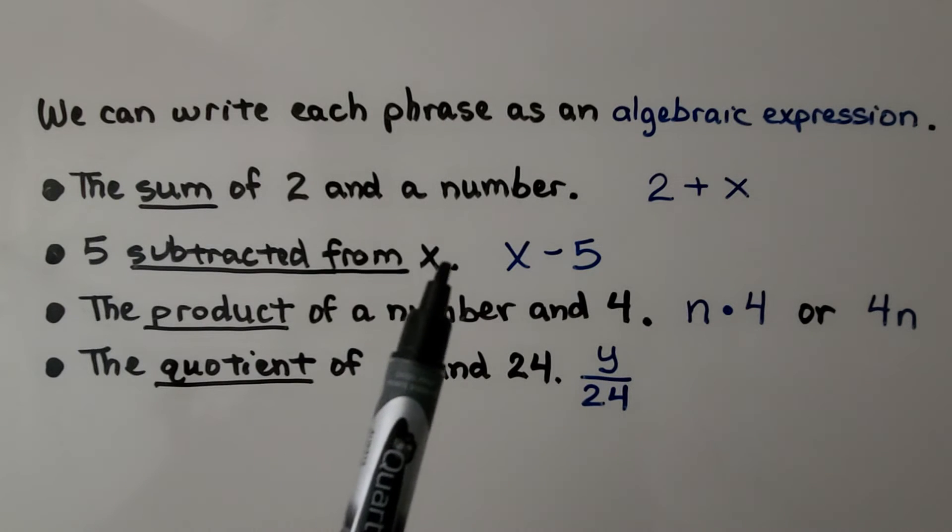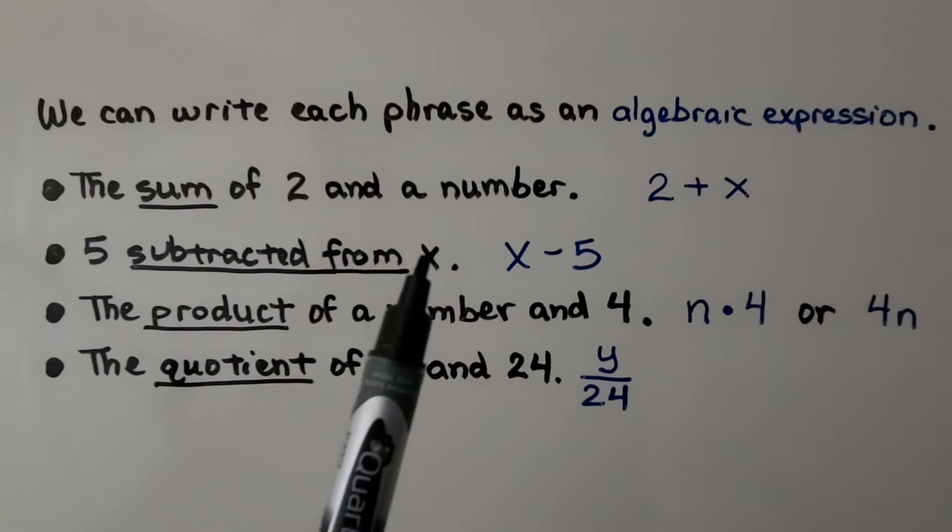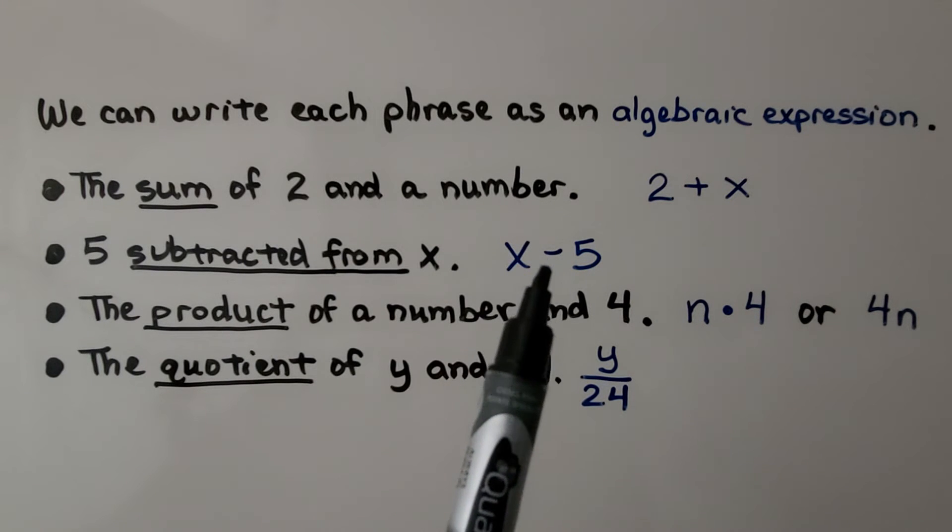5 subtracted from x, it's being subtracted from the x, so we would have x minus 5.